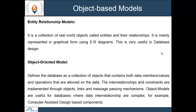An entity can be any object which has some attributes that uniquely identify it. The object-oriented model defines the database as a collection of objects that contain both data members, values, and operations on a particular object — it is a collection of objects as well as the attributes and the operations that can be performed on that data. Object models are useful for databases where data interrelationships are complex, for example in computer-assisted design, where there are complex interrelationships between components.